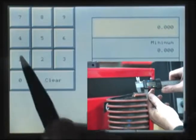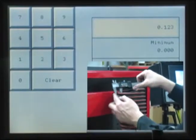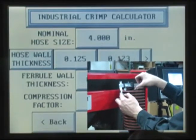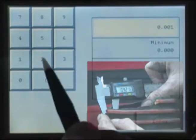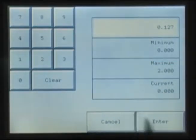Pressing the right arrow button will bring up another hose wall thickness button where up to three wall thickness measurements can be entered, and the ACT Controller will average the three measurements and calculate the hose's outside diameter.